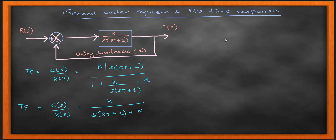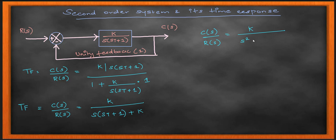I'm going to slightly rearrange the terms and do some substitutions. I'm going to bring in omega, which is my natural frequency, and then I'm going to bring in something called the damping ratio.